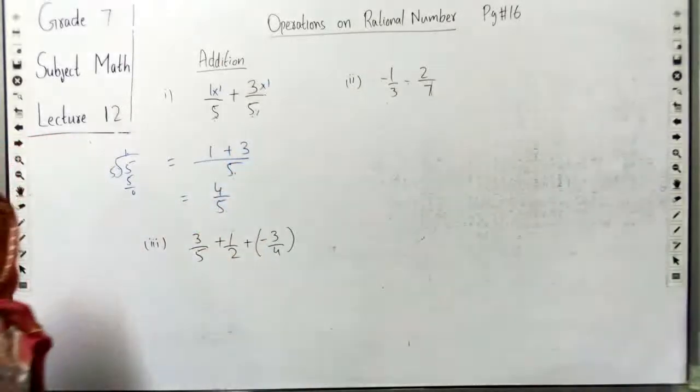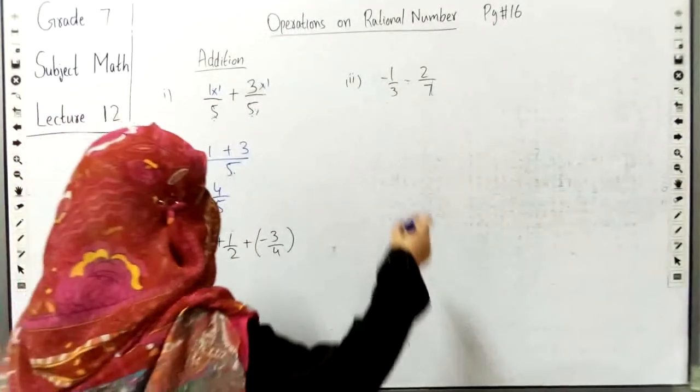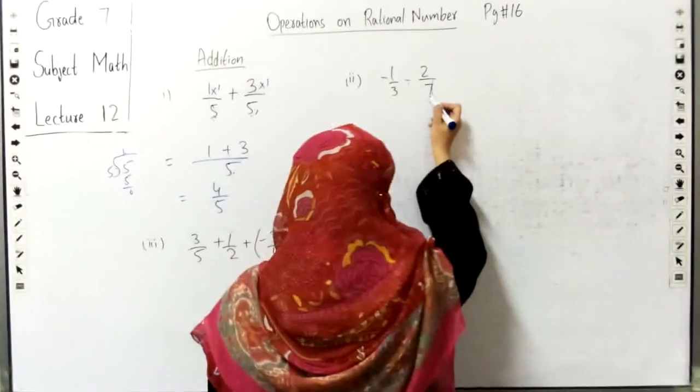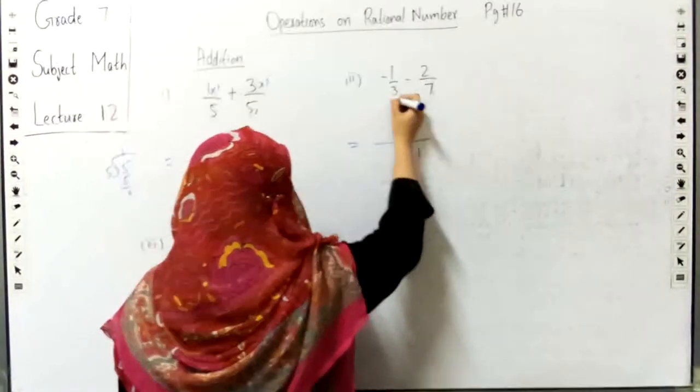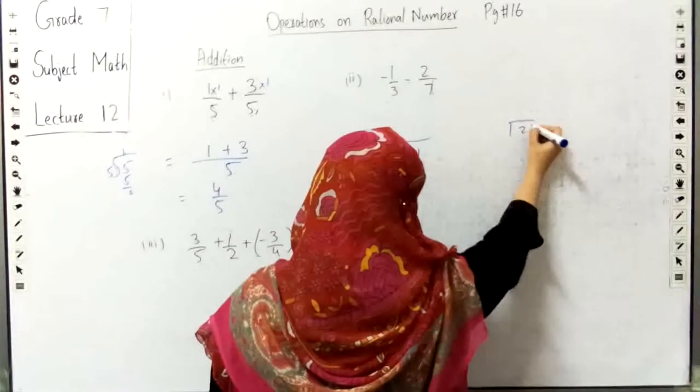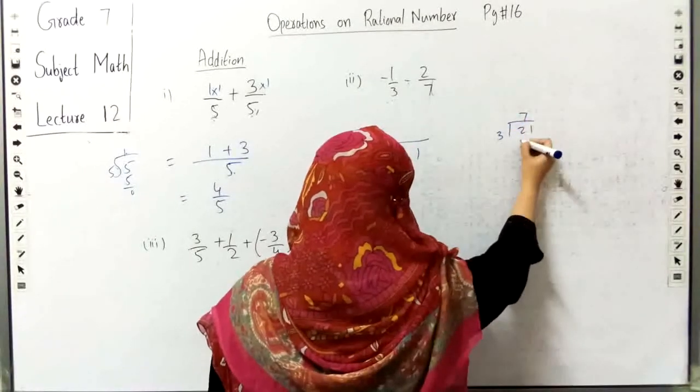Next is minus 1 by 3 minus 2 by 7. So 3 and 7 we will take LCM. We have 21. We will divide 21 by 3, so our answer is 7.